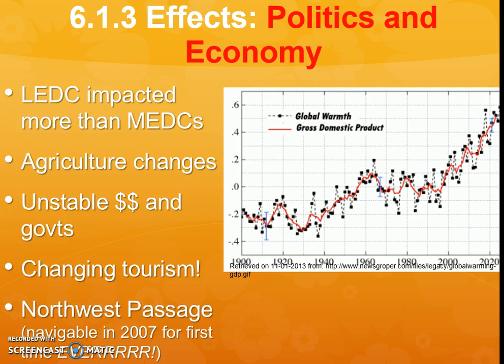Interestingly enough, there will be some benefits. For instance, because of the melting ice, the Northwest Passage was first successfully navigated again in 2007 because there had been too much ice there previously. This is changing how our global economy works because people are able to get around in different ways.